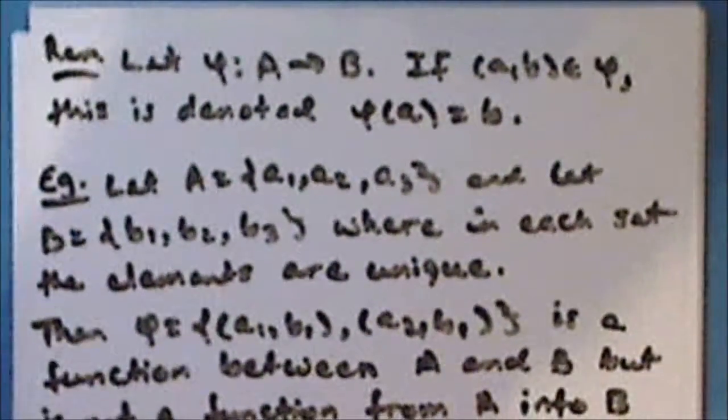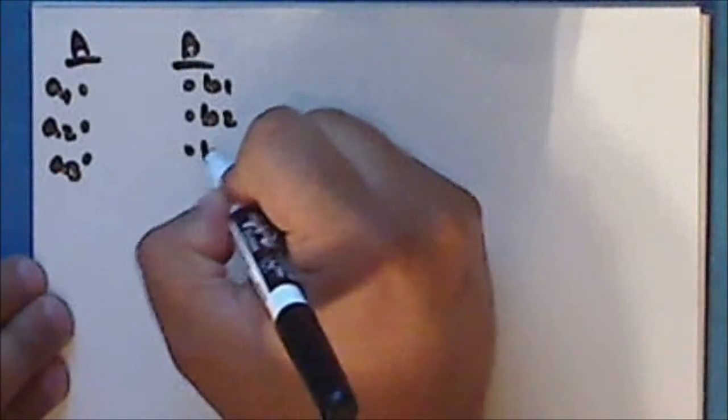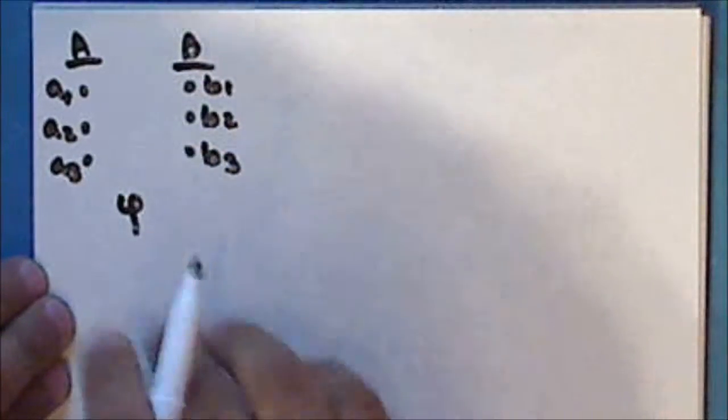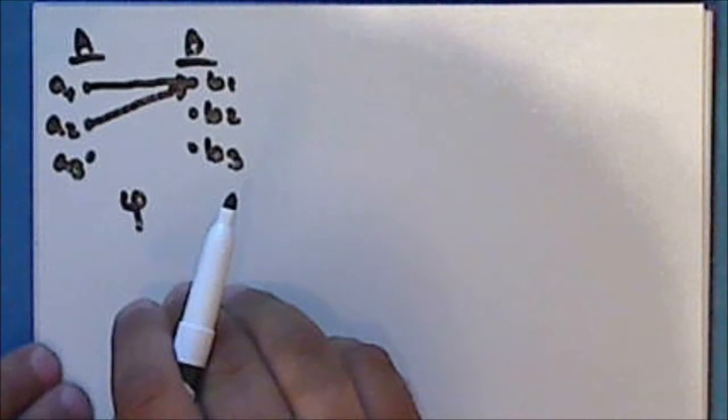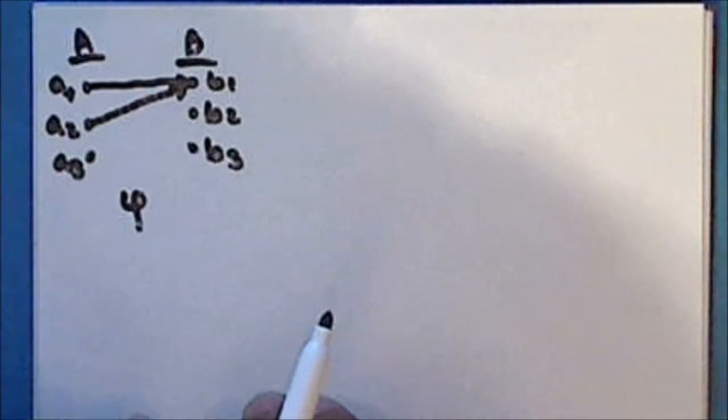Let's look at a map diagram. The function φ between the sets A and B maps the element a₁ onto b₁, and also maps a₂ onto the same element b₁. But this is not a function from the set A into the set B, since the element a₃ is not paired with any element in the set B.